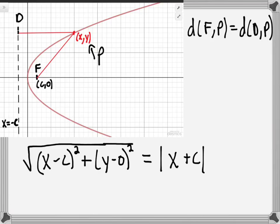At this point, we have the equation for a parabola: √((x-c)² + (y-0)²) = |x + c|. This probably doesn't look like what you expect, so let's clean it up. We'll square both sides.